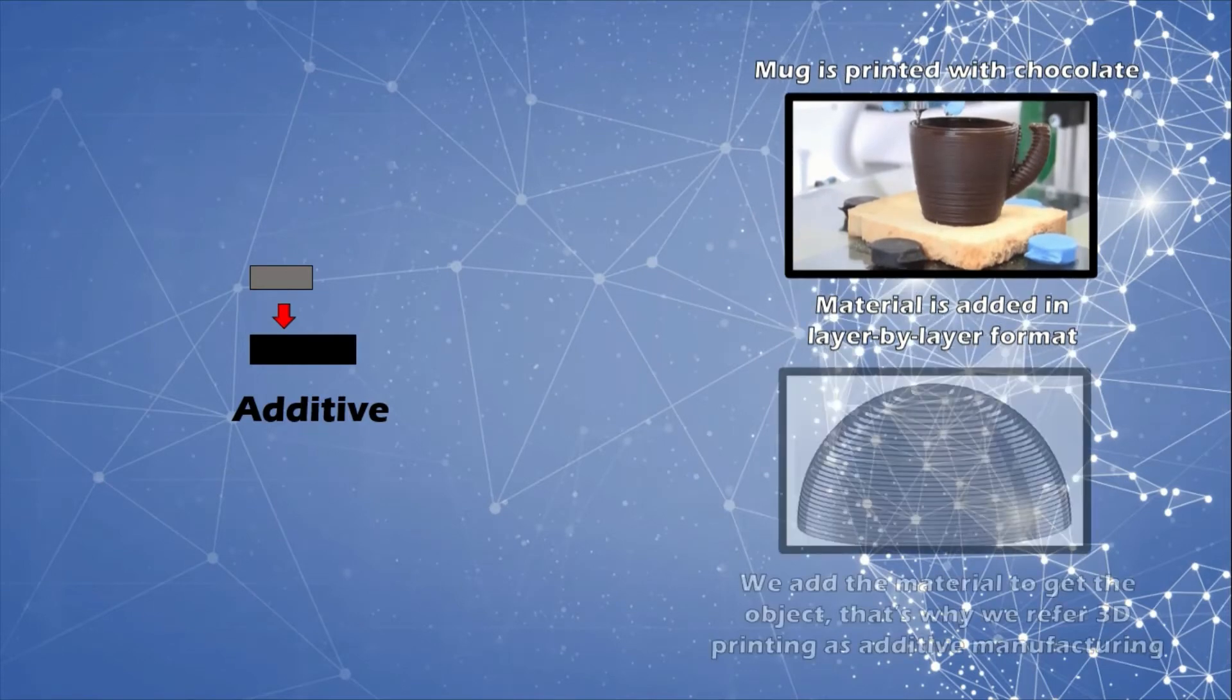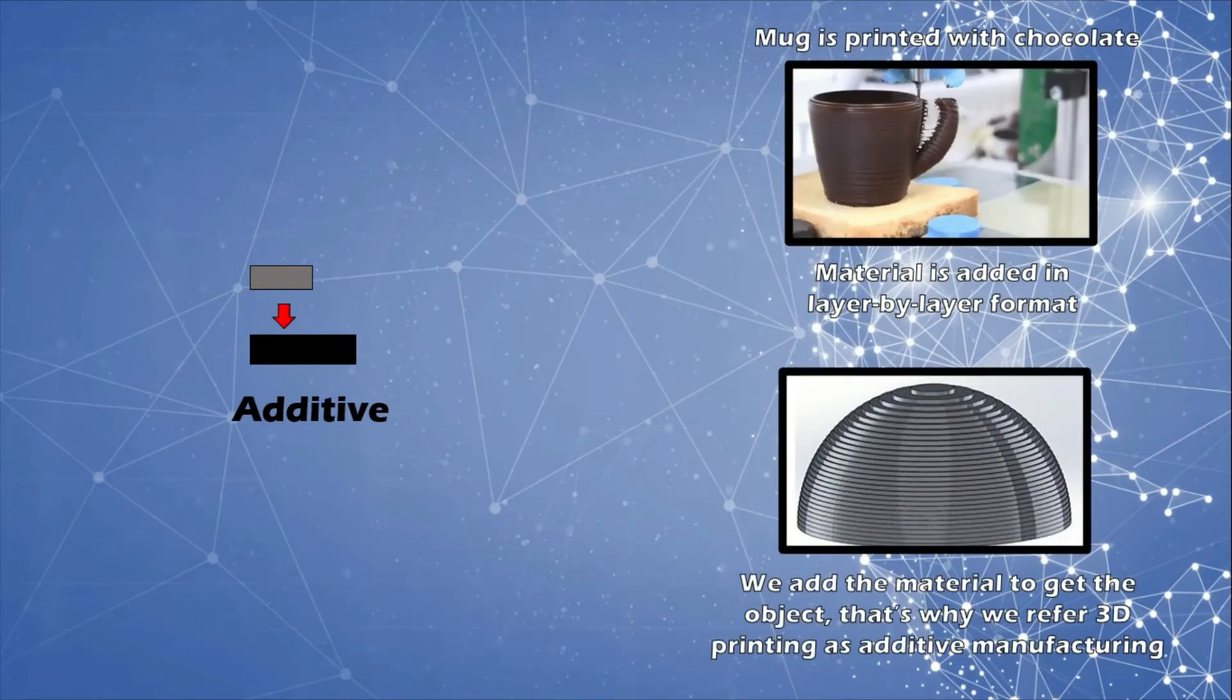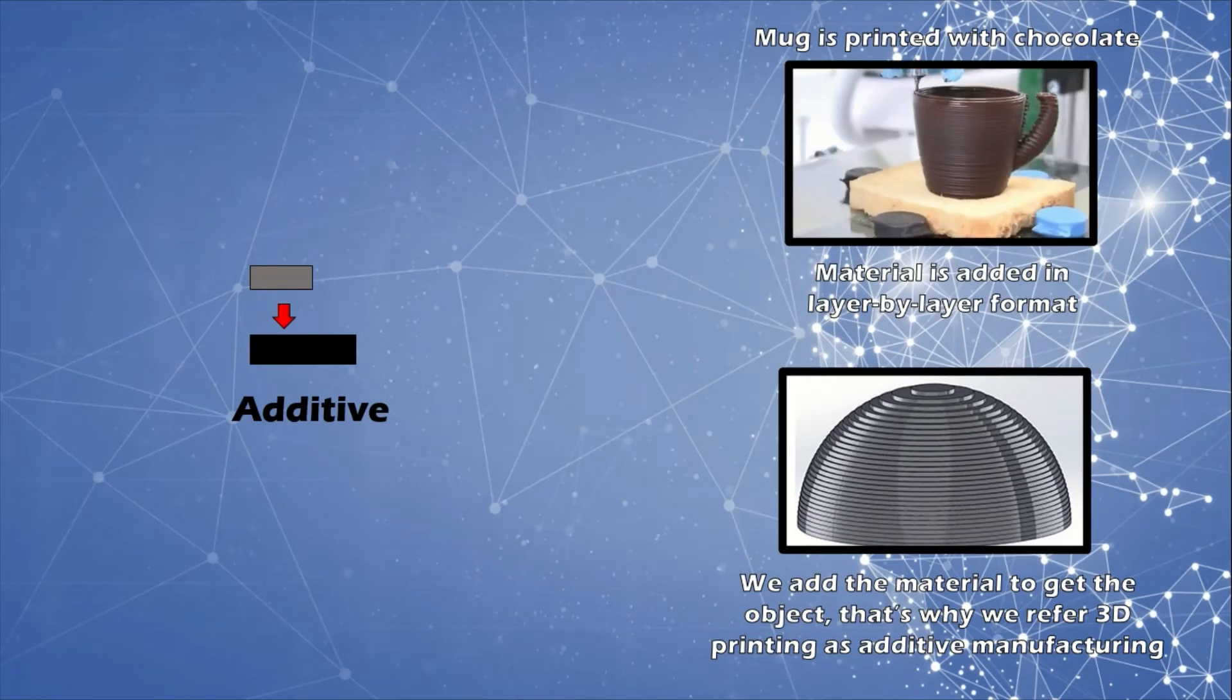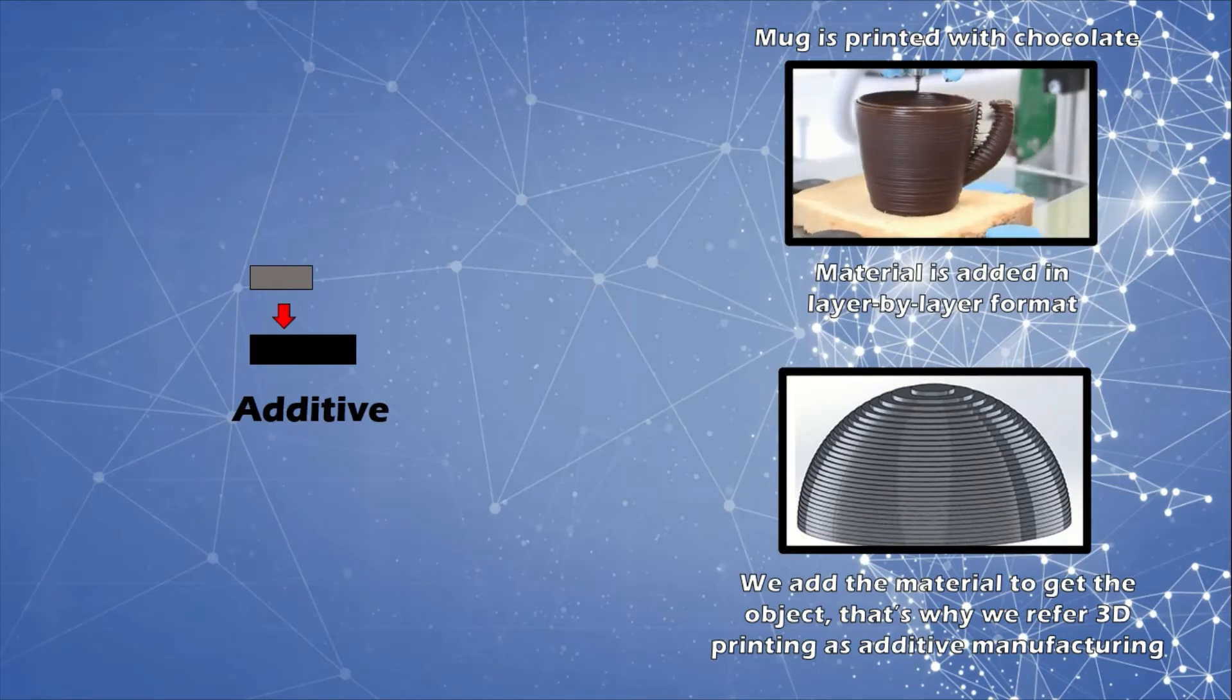Let's take an example of this 3D printed bowl. In this process, instead of removing the material, we add the material. That is why we refer to 3D printing as additive manufacturing. A material is manipulated so that successive portions of it combine to form the desired object.